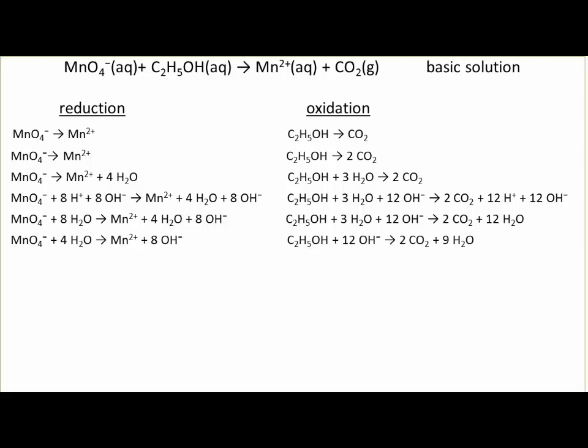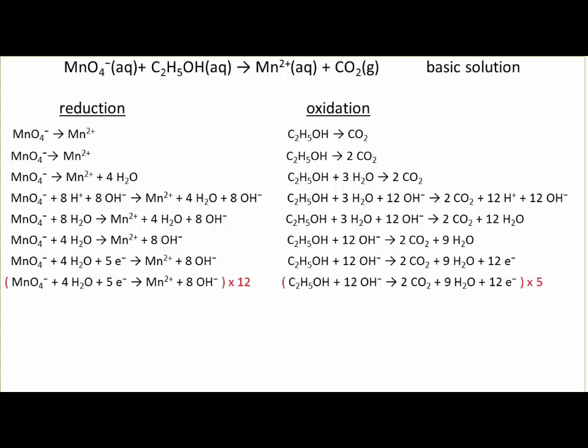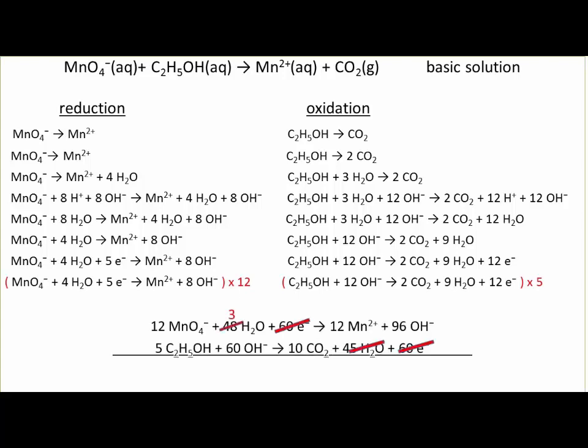After having done this, one can return to the algorithm previously seen. Balance the charge by adding the appropriate number of electrons to one side. Bring the number of electrons in each half-reaction to the same value. Add the two half-reactions to obtain a perfectly balanced chemical reaction.